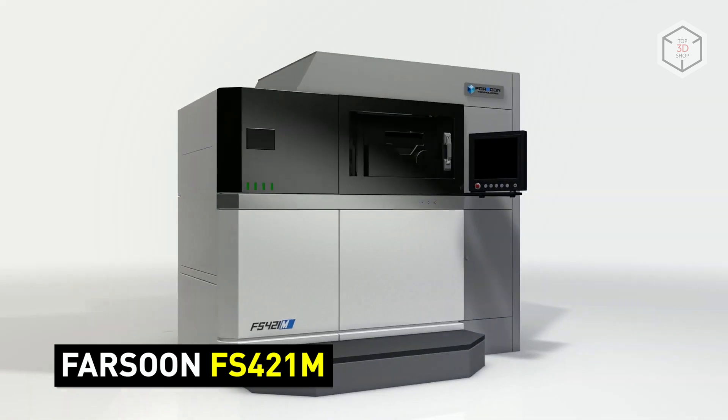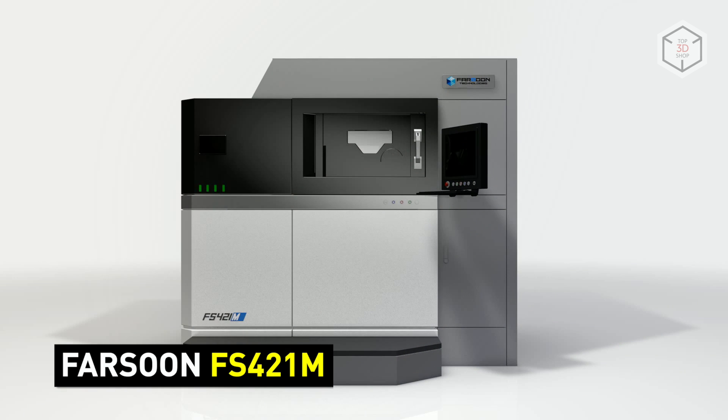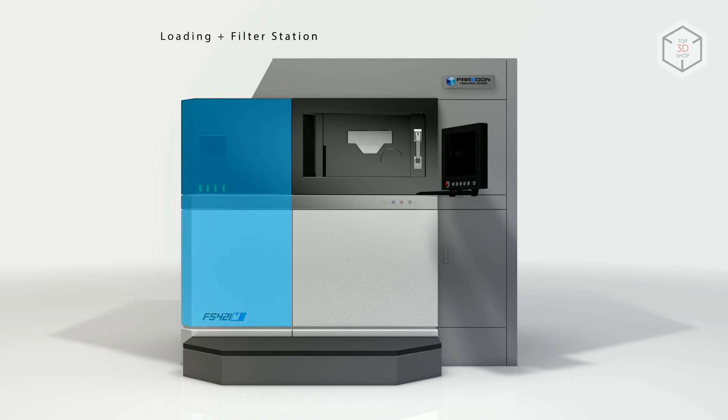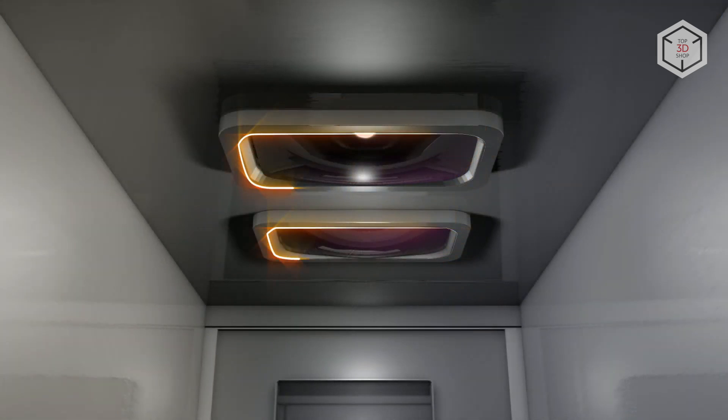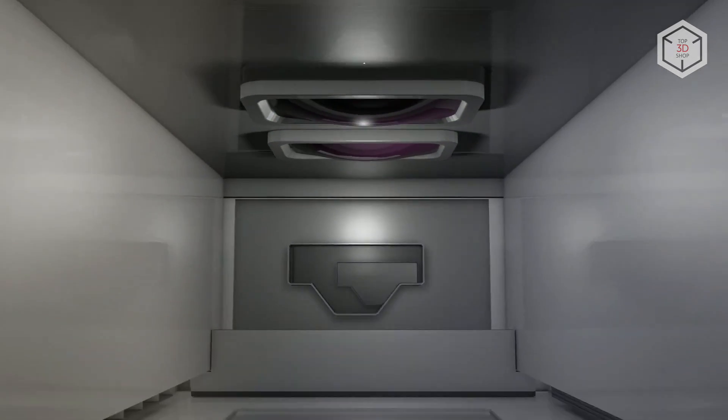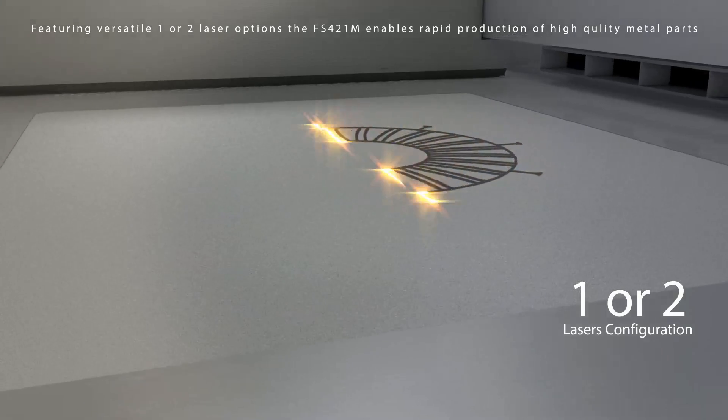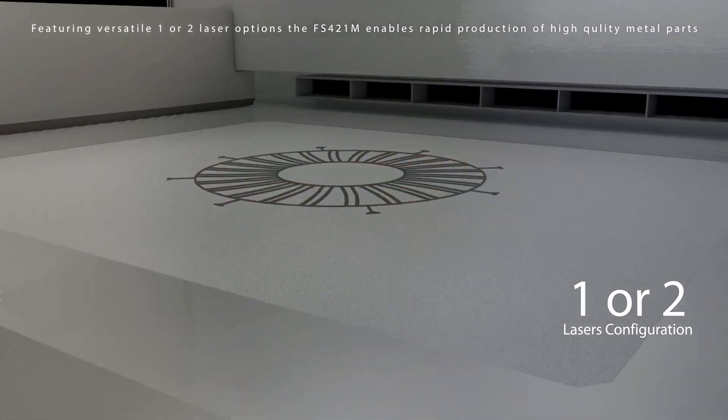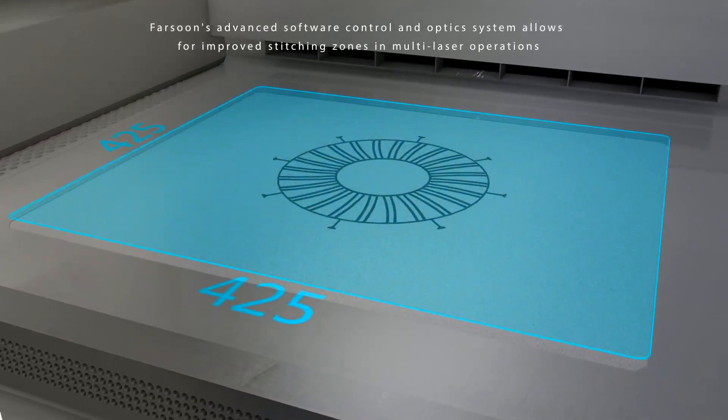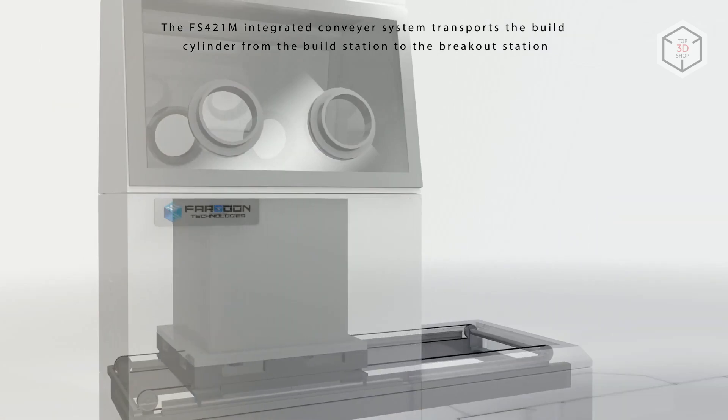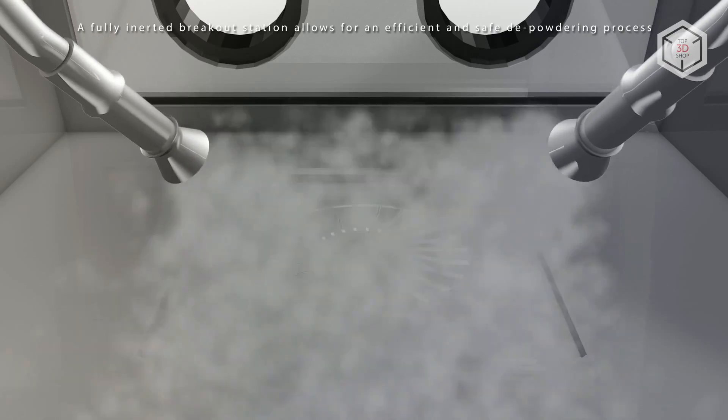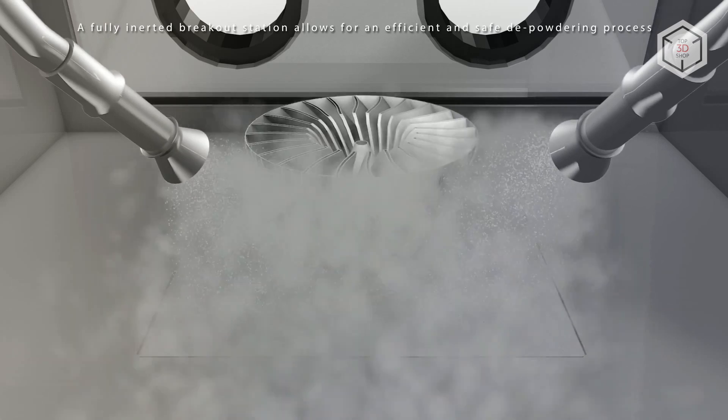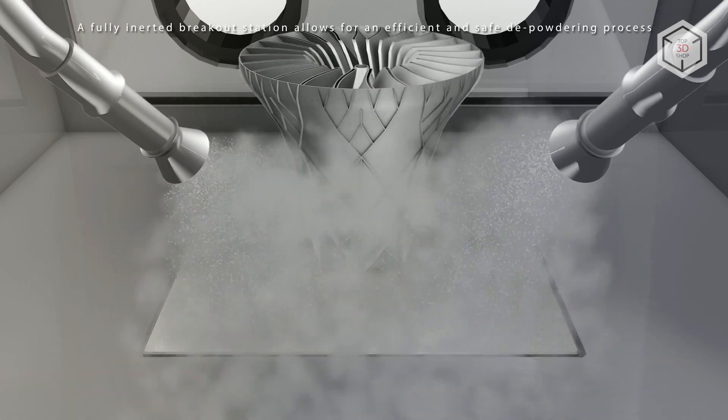Due to the combination of key parameters, the Farsoon FS421M 3D printer is one of the leaders in its segment. The printer is equipped with a 500-watt fiber laser and allows installing a second one. The dimensions of the build chamber are 425 x 425 x 420 mm, with the minimum layer thickness of 20 microns. These parameters are sufficient for the majority of additive manufacturing tasks. The automated system is ready for long-term continuous operation with a variety of metal powders.